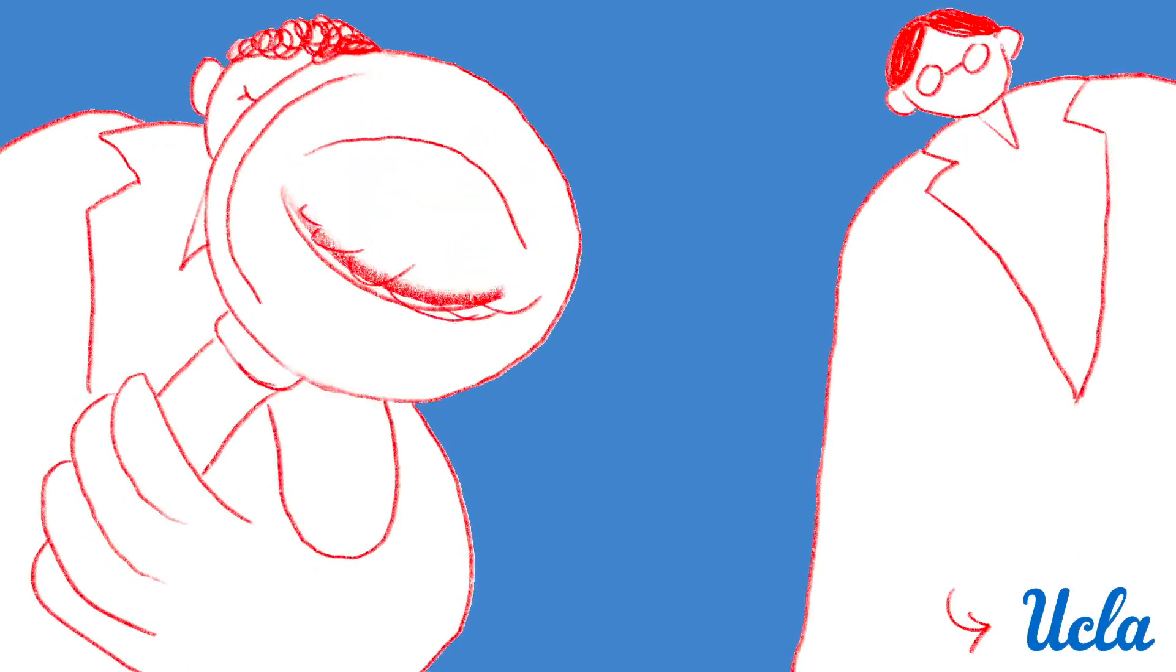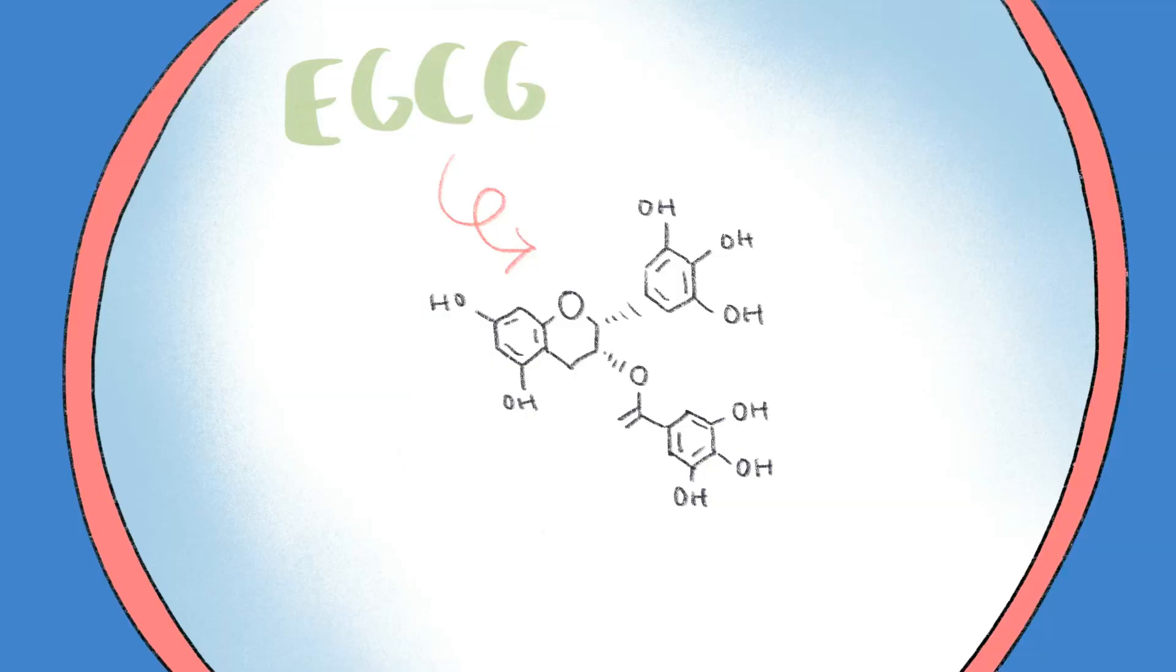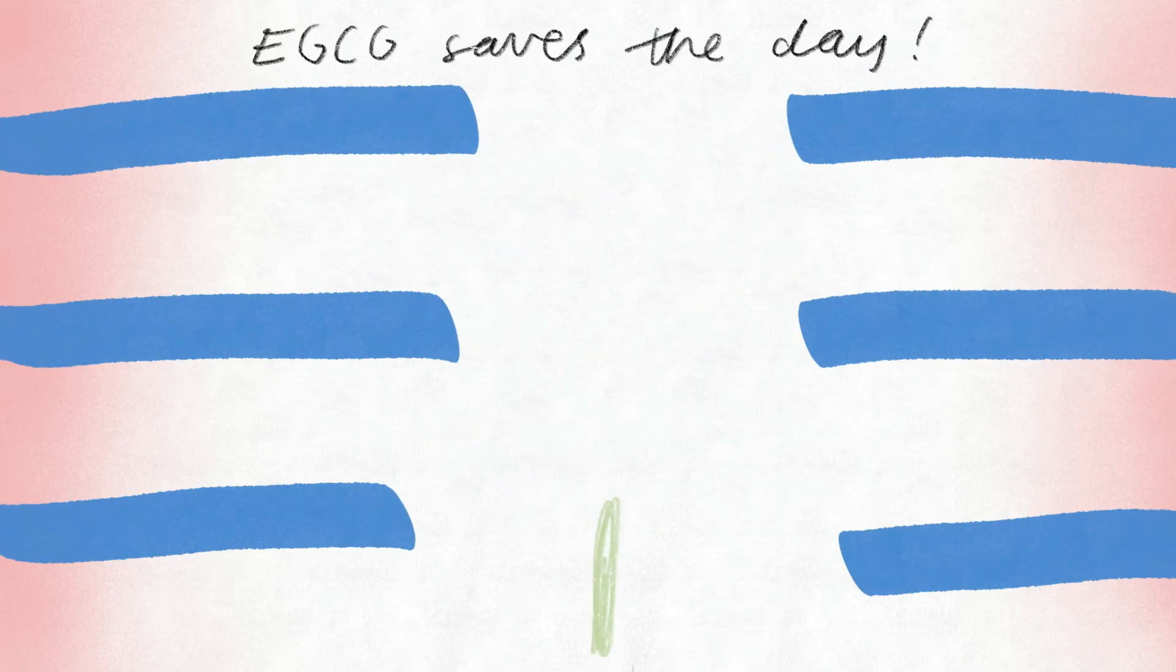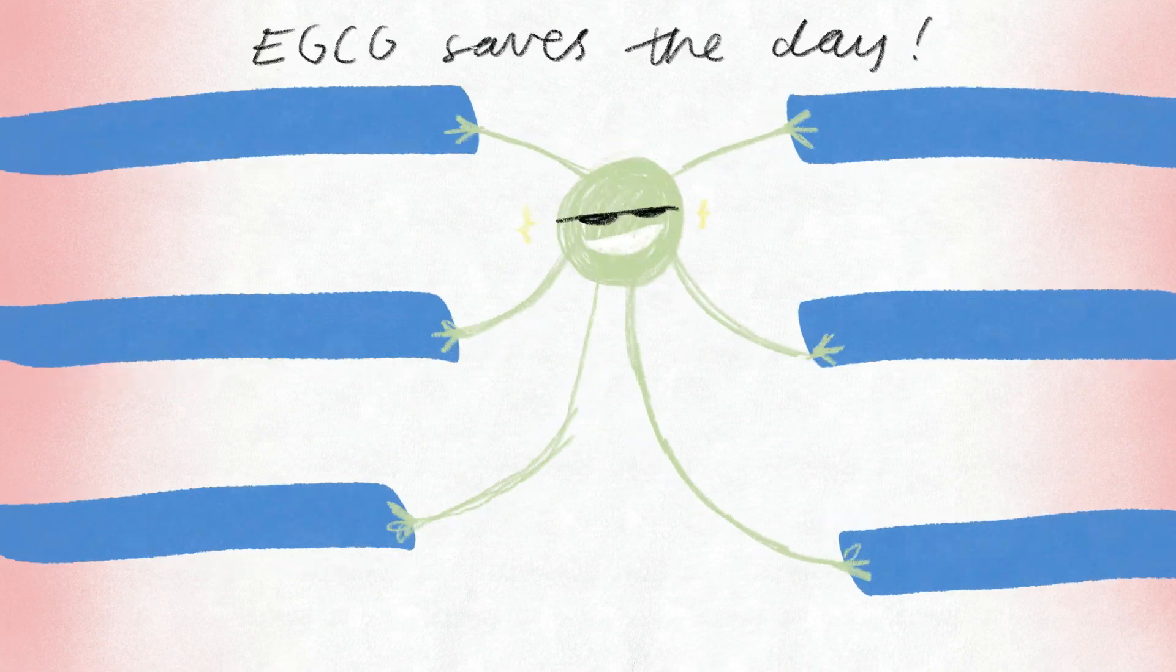But green tea can help! A 2022 study by researchers at UCLA discovered that EGCG in green tea can actually untangle the tau fibre tangles in Alzheimer's by binding to the clefts between layers of tau fibres and breaking them apart.